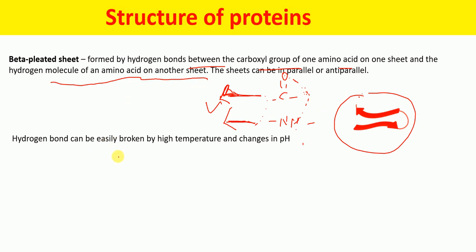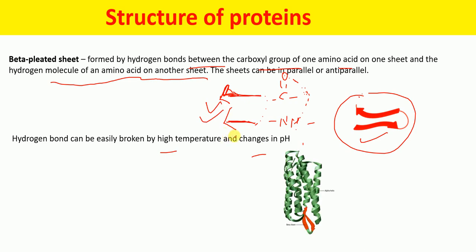These hydrogen bonds can be easily broken by high temperature and changes in pH. This is an anti-parallel beta pleated sheet and this here is the parallel beta pleated sheet. This example shows both types of secondary structure of the protein — this one is the alpha helix and this one is the beta pleated sheet.